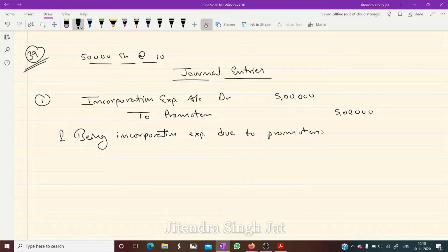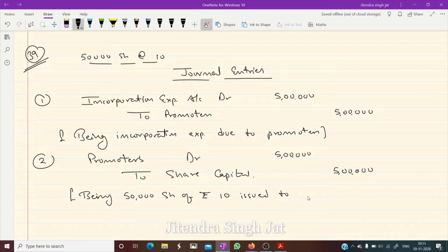Now what, we are giving, company has issued shares to the promoters. So Promoters Debit To Share Capital, 5 lakh. Very simple, isn't it children? Being 50,000 shares of Rupees 10 issued to promoters. I hope it is clear to everyone.